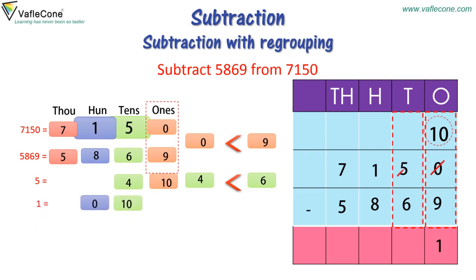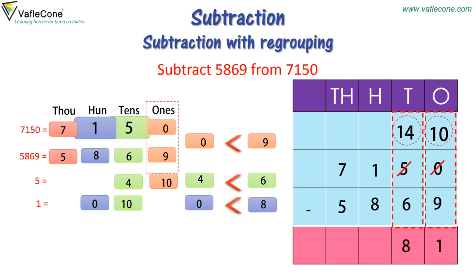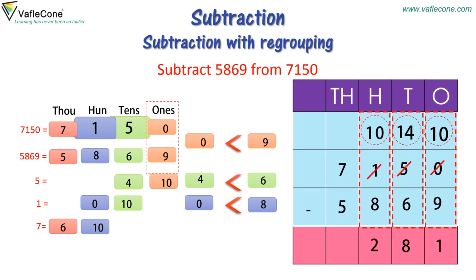So now at the 10's place it is 14 tens. Subtracting at the 10's place, 14 minus 6 is equal to 8. At the 100's place, 0 hundreds is less than 8 hundreds. So we regroup 7,000 as 6,000 and 10 hundreds. Subtracting at the 100's place, 10 minus 8 is equal to 2. At the 1,000's place, we subtract 6,000 minus 5,000, which is 1,000. So the difference is 1,281.